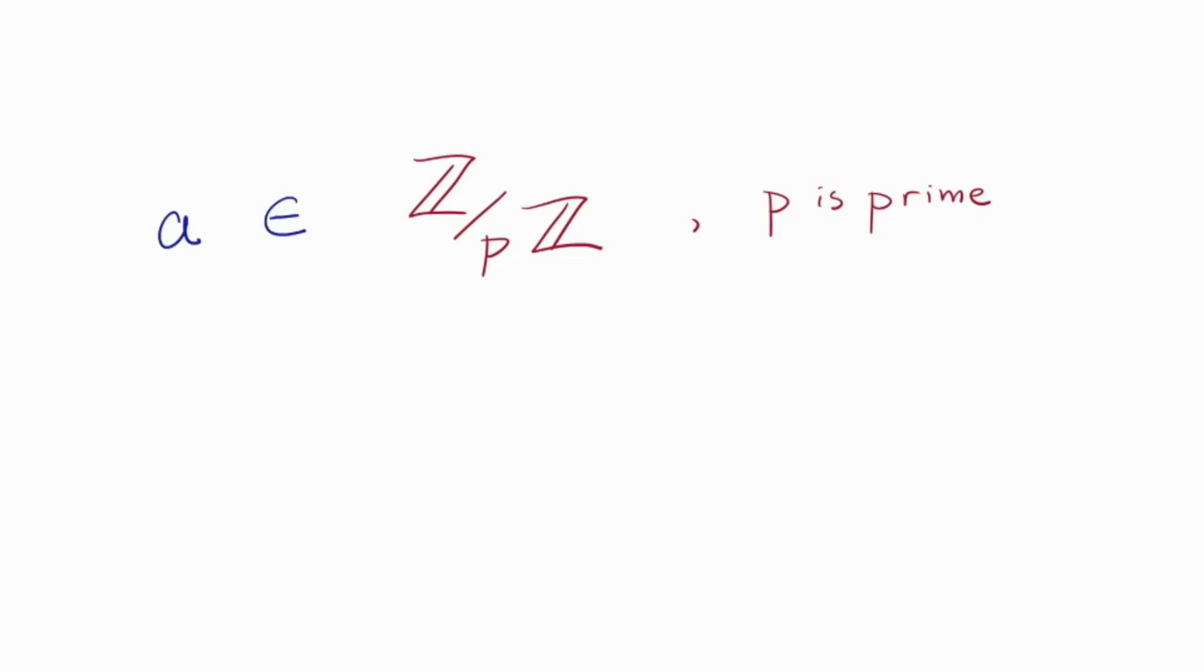I'll call it p to remind you it's prime. Now consider an invertible element a in Z mod pZ. In fact, all non-zero elements are actually invertible. There's another video you can check out, multiplication in motion. So we're just assuming that a is non-zero. We want to find the multiplicative inverse of a mod p, meaning we want to solve ax is congruent to 1 mod p.